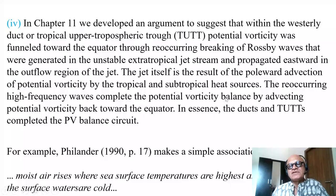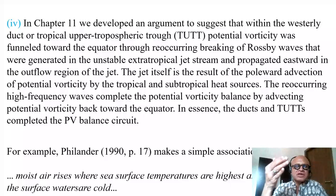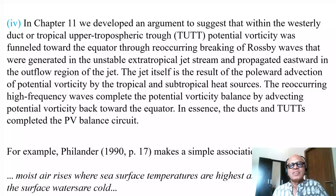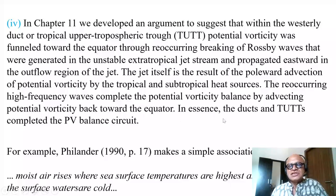The jet itself is the result of the poleward advection of potential vorticity by the tropical and subtropical heat sources. The recurring high-frequency waves complete the potential vorticity balance by advecting PV back towards the equator — the Hadley cell advects PV poleward, then breaking Rossby waves bring it back equatorward, with further advection by the easterlies funneled back towards higher latitudes. In this sense, the ducts completed the PV balance circuit.